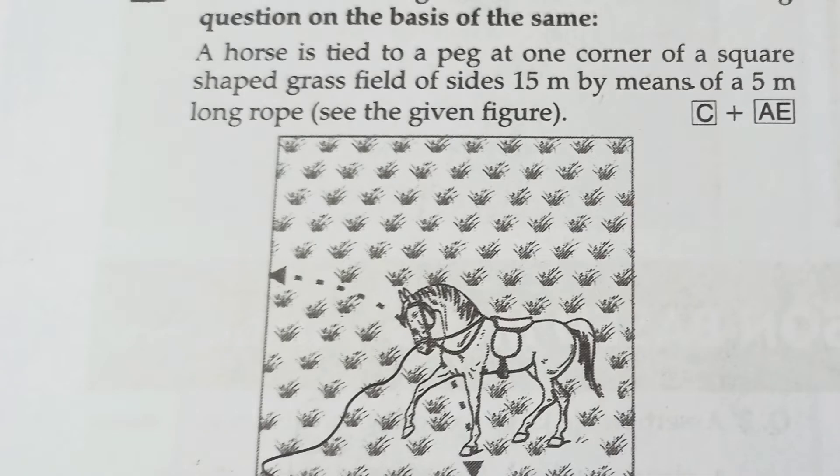A horse is tied to a peg at one corner of a square shape grass field of sides 15m by means of a 5m long rope.